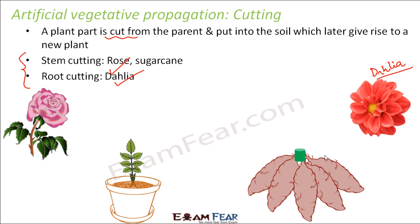These roots are modified roots and they help in food storage. While talking about natural vegetative propagation, we said that it can happen with the help of roots — dahlia was one such example. Such roots are small, thick, and fleshy and help in food storage, and they are capable of bearing buds, so they can give rise to new plants. In this case, we have to cut the root of the plant and then put it into the soil. Over a period of time, the buds will develop and give rise to new plants.